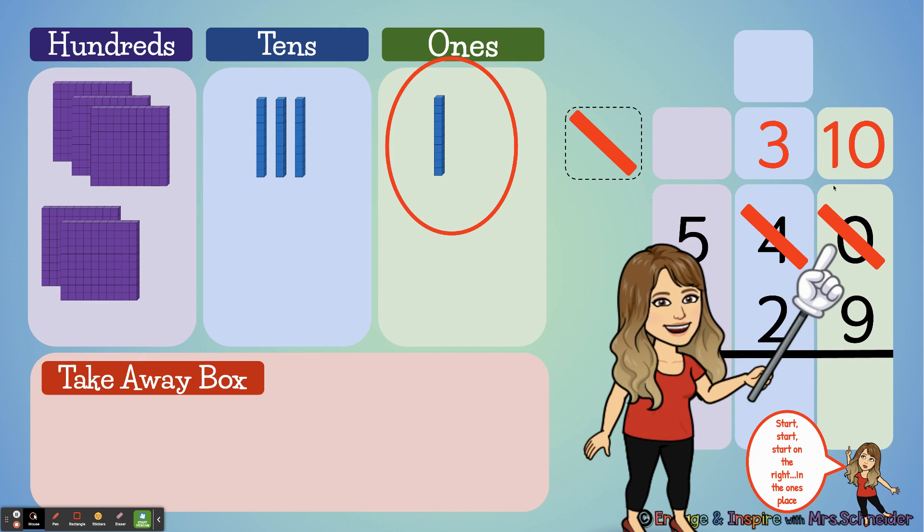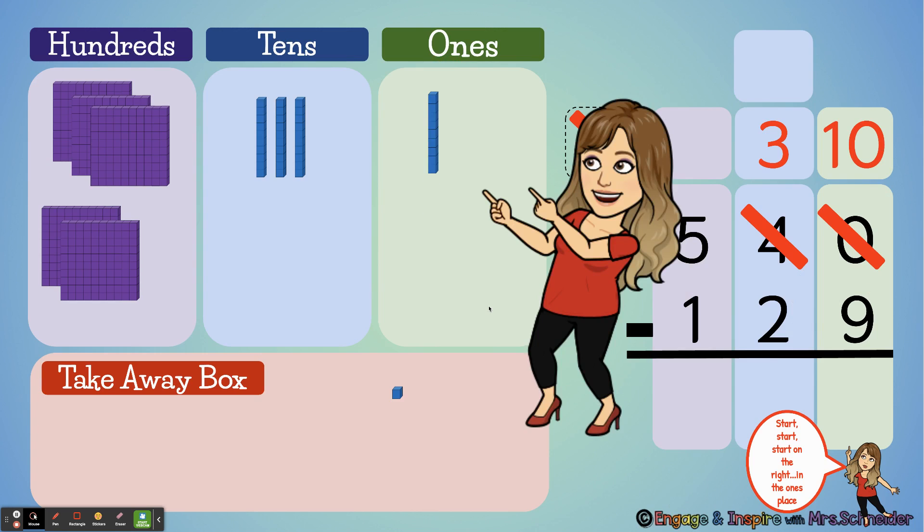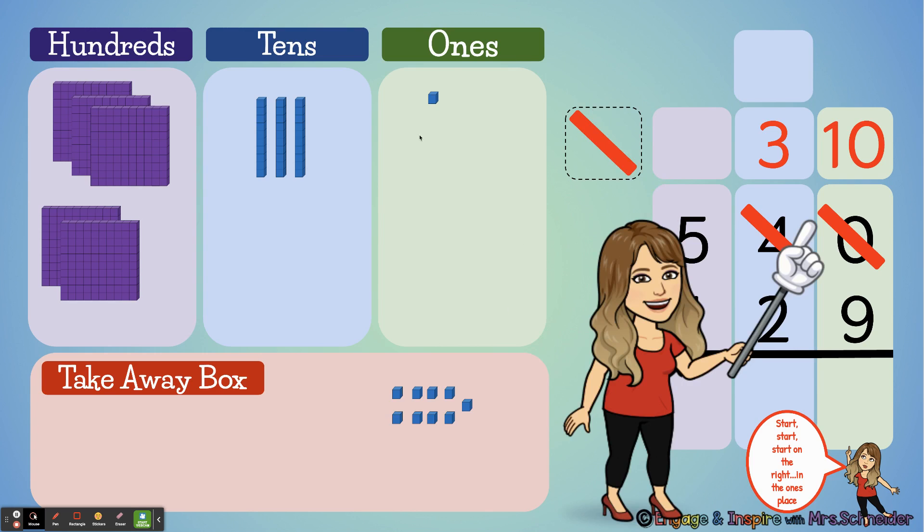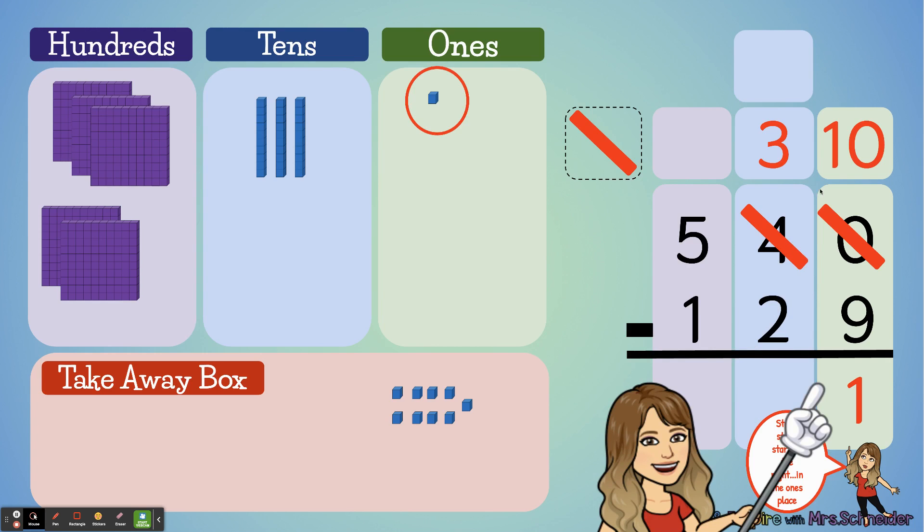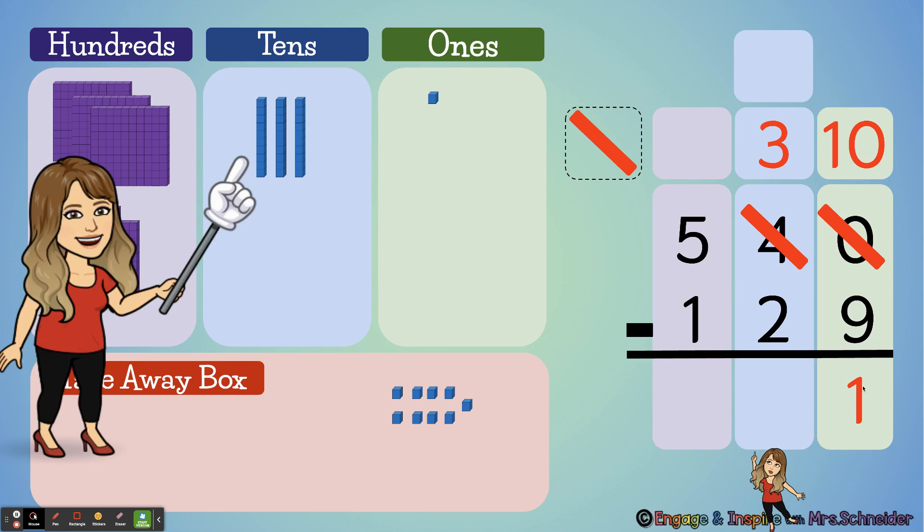Now I have enough ones to give nine away: one, two, three, four, five, six, seven, eight, nine. Okay, how many ones do I have left? One, correct! Because ten minus nine equals one. Great! Now we're going to go to our tens place.